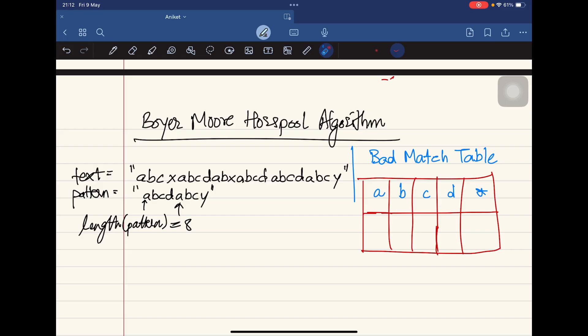In this algorithm, the first thing we need to do is create a bad match table. The bad match table is created based on the pattern that we have. To calculate this, we need to create the table with the characters of the pattern. In this case it would be ABCD and the star, determined by the length of the pattern. We do not consider the last character in the pattern. So I will fill this bad match table, which is also called the bad character shift table.